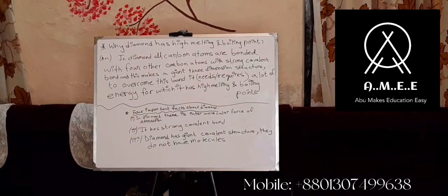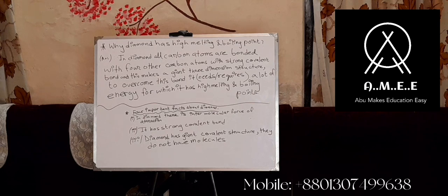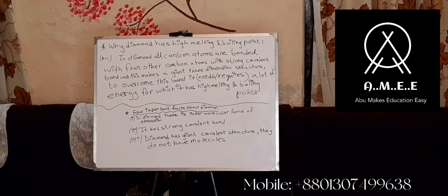Why does diamond have high melting and boiling points? In diamond, all carbon atoms are bonded with four other carbon atoms with strong covalent bonds, and this makes a giant three-dimensional structure. To overcome this bond, it needs or requires a lot of energy, which is why diamond has high melting and boiling points.